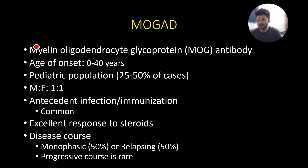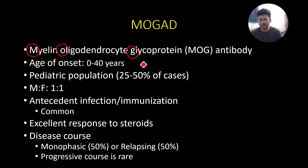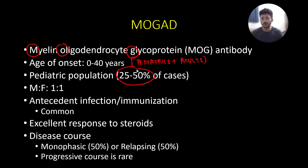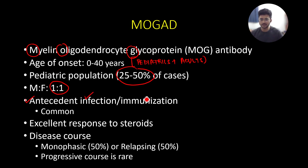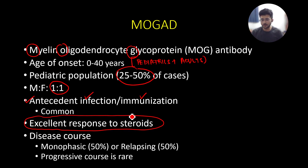MOG stands for myelin oligodendrocyte glycoprotein, and antibodies to this myelin oligodendrocyte glycoprotein are responsible for MOG antibody associated disease. This disease can affect both children as well as adults; around 25 to 50 percent of cases are pediatric patients. Both males and females are affected equally. It's very common for MOGAD to present as a para-infectious or para-vaccination phenomenon, so it's vital that we ask history for antecedent infections as well as immunizations. Another classical feature of MOGAD is its excellent response to steroids.